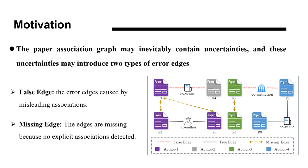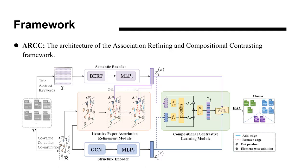Here is the framework of our proposed method ARCC, which consists of three components. The feature encoder is used to obtain semantic and structural embeddings. The Iterative Paper Association Refinement module is designed to achieve a more reliable graph. The Compositional Contrastive Learning module generates better paper representations.